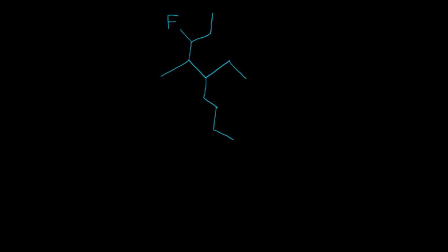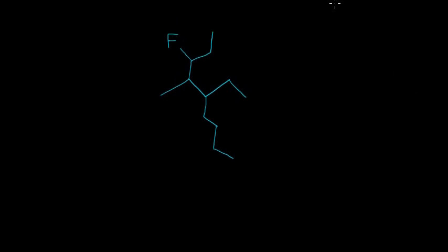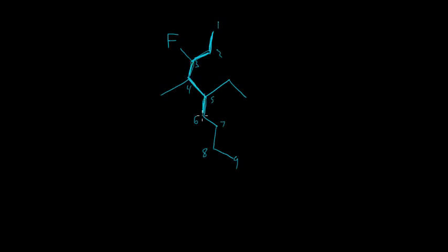I'll go ahead and start numbering up here because this is the side with the nearest group coming off. So one, two, three, four, five, six, seven, eight, and nine. I'll go ahead and make the longest chain a little darker too. This is what I do on tests — I would always bold the longest chain just so I didn't make a mistake. And then I always circle the group.